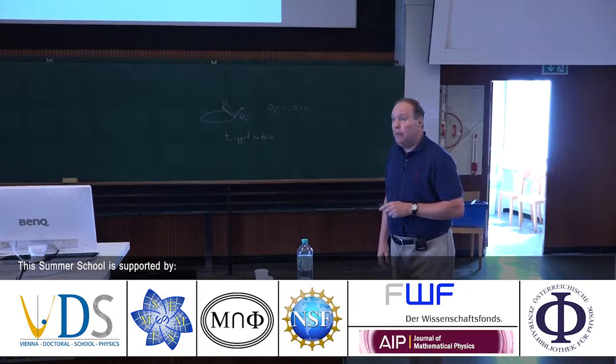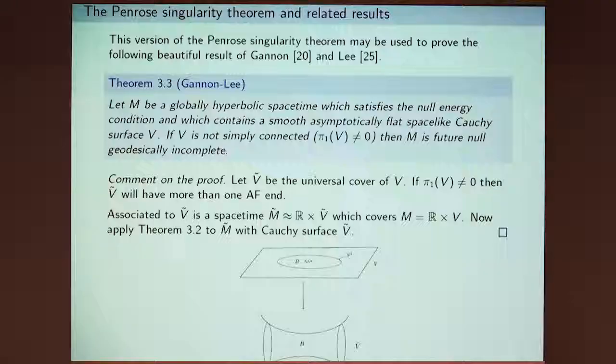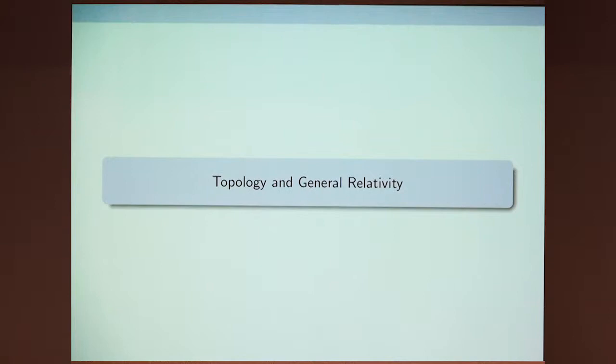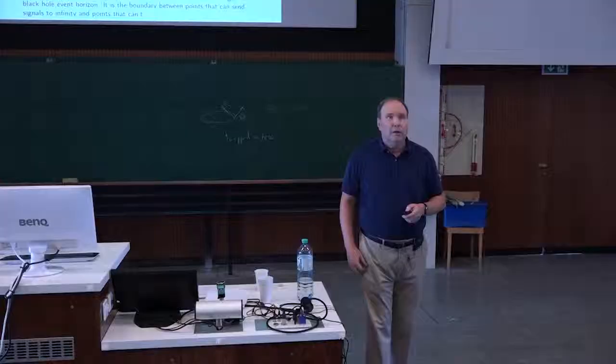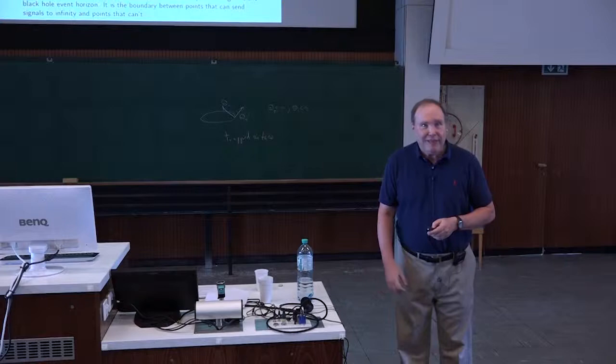This theorem leads into the notion of topological censorship, which we'll be talking about in our last lecture tomorrow. Simply connected means that every loop in the space can be deformed to a point, like R3 or S3, the three-sphere.